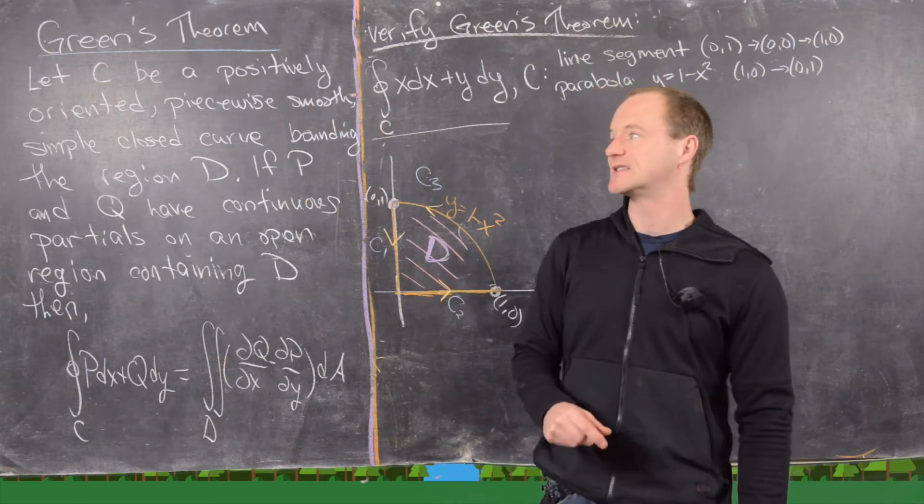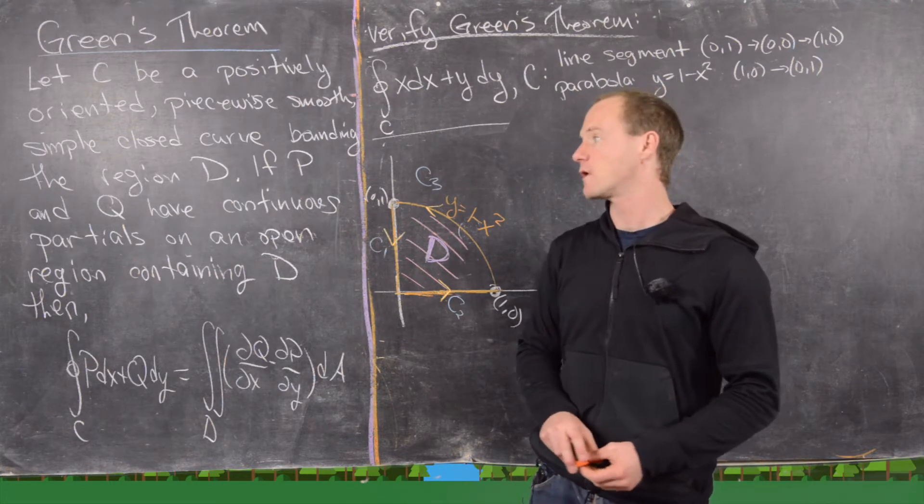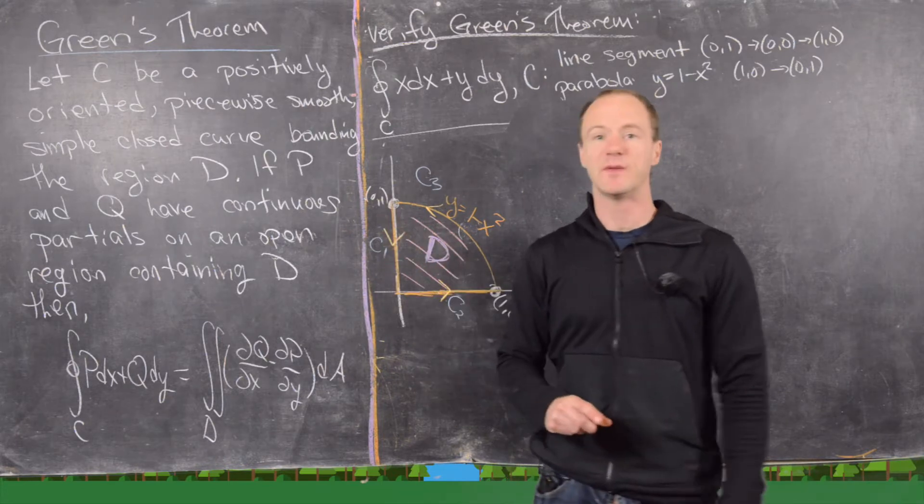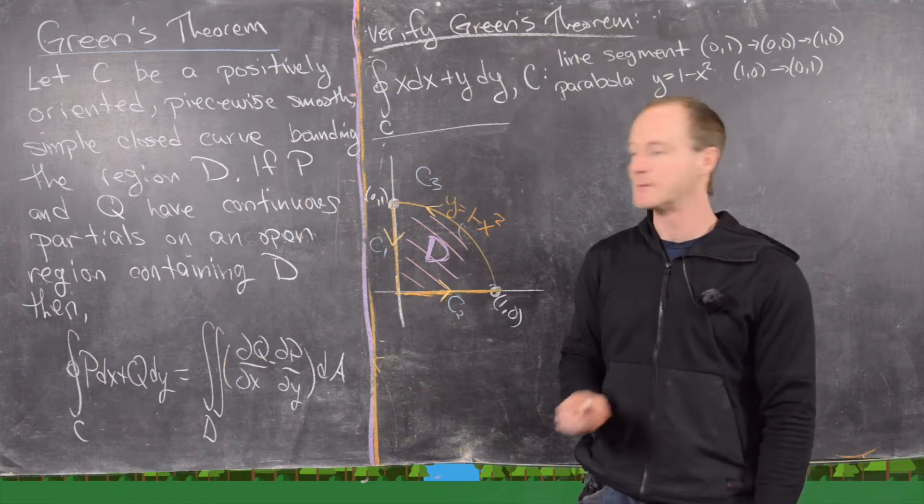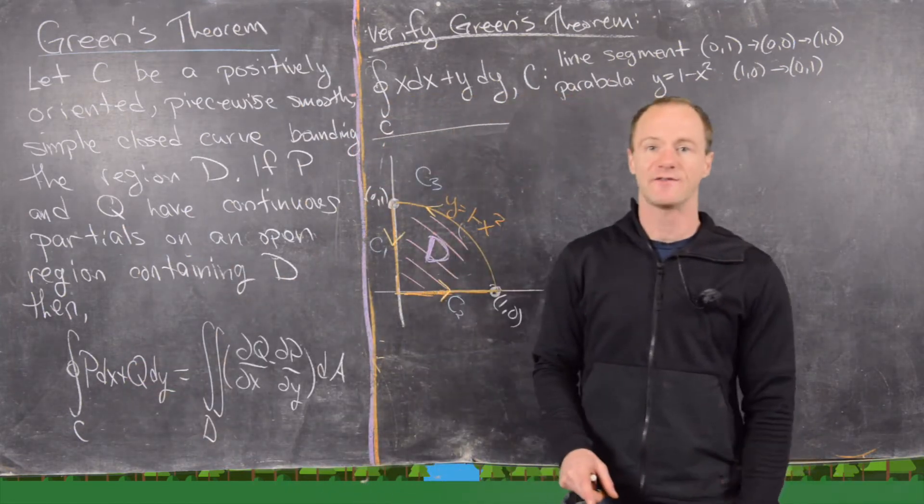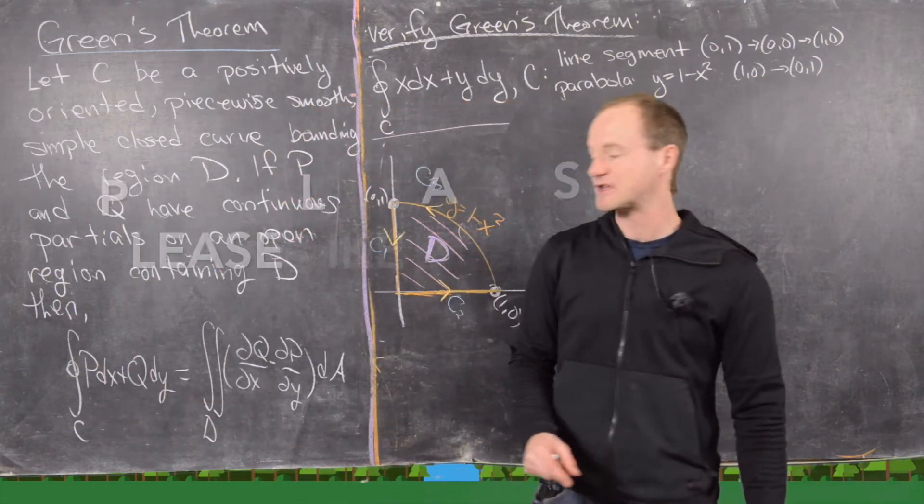We want to assume that C is a positively oriented piecewise smooth simple closed curve that bounds a region D, and then also if P and Q have continuous first partials on an open region containing D, then we have this equivalence of integrals. So on the left is a line integral around C of P dx plus Q dy,